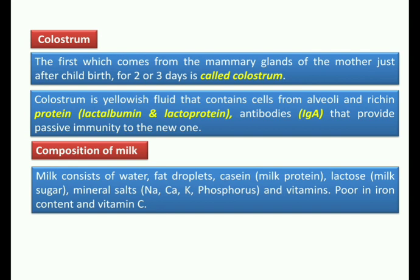Passive immunity means immunity that develops indirectly — it is transferred from the body of the mother rather than developed directly by the infant's own body. So colostrum is a yellowish fluid containing cells from alveoli, rich in proteins like lactalbumin and lactoprotein, plus IgA antibody which helps in passive immunity of the newborn.